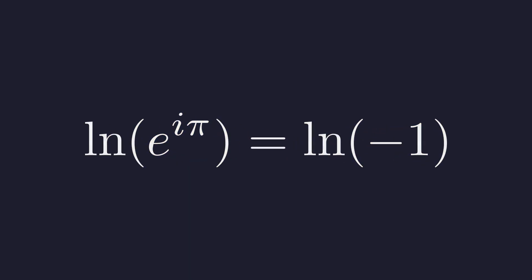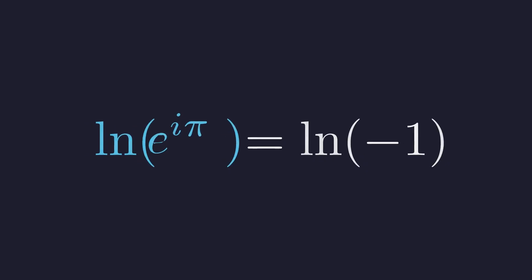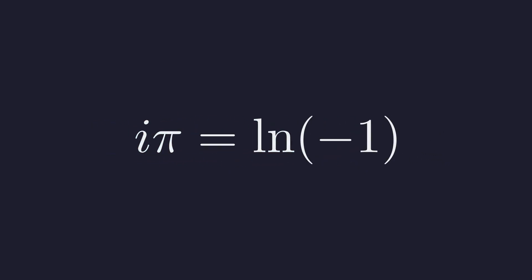To isolate the logarithm we are looking for, we take the natural logarithm of both sides of the equation. On the left side, the natural logarithm and the exponential function are inverses, so they cancel each other out. And there we have it. The natural log of negative 1 is i times pi. This is known as the principal value.